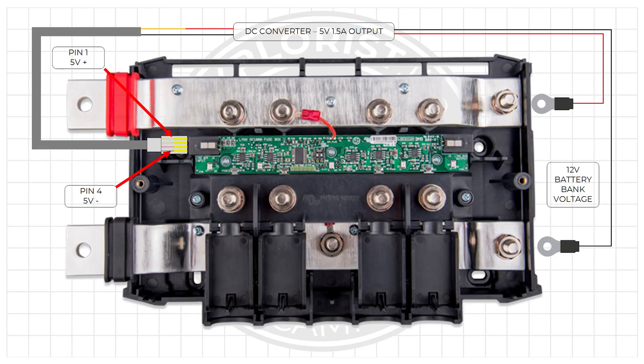All we need to do is use a little converter to convert battery bank voltage down to 5 volts so we can deliver positive 5 volts to pin 1 of this connector and a negative connection to pin 4 of this connector. So let's get started.